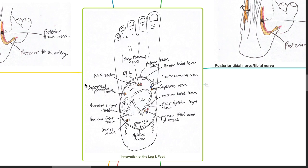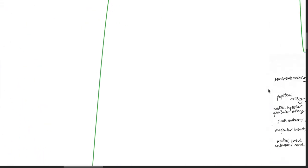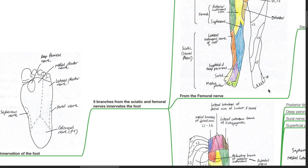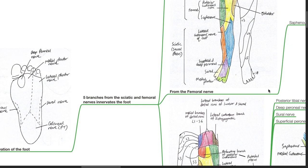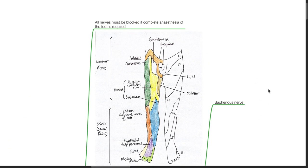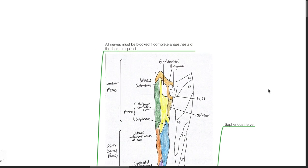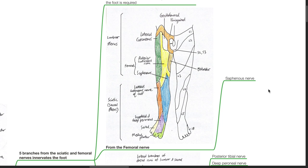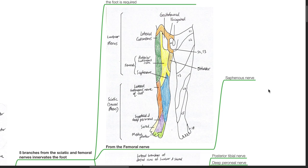Good evening, Dr. Phil here. Today we will be discussing the innervation of the leg and foot. Five branches from the sciatic and femoral nerves innervate the foot. All nerves must be blocked if complete anesthesia of the foot is required. From the femoral nerve branches the saphenous nerve.